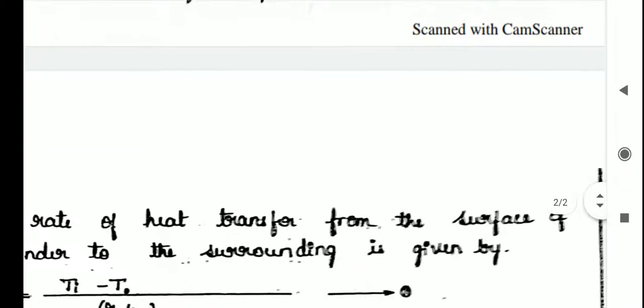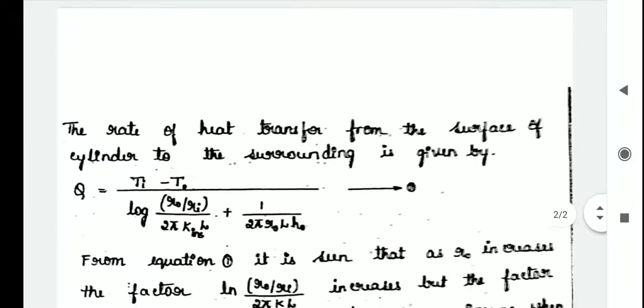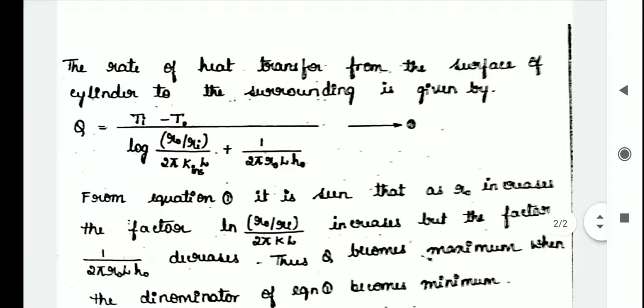The rate of heat transfer from the surface of the cylinder to the surrounding is given by Q equals Ti minus T0 divided by log of Rout by Ri upon 2pi KL plus 1 divided by 2pi Rout L into H0. This is the same formula we discussed in the previous video. That is Q equals delta T divided by R. R is here.